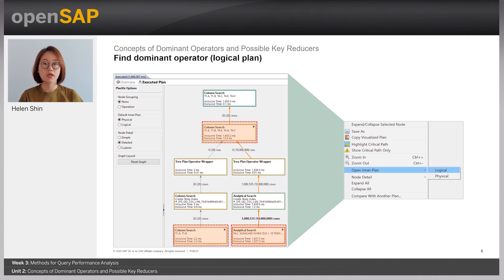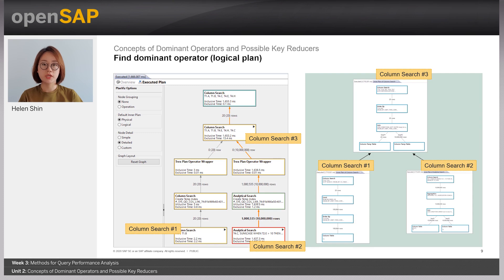Now let's check out the Logical Inner Plan for each column search and find the Dominant Operator and Possible Key Reducer within it. The Logical Plan gives you the big picture and overview of the plan, so it will be very useful to understand the query optimizer tree and structural information. To see the Logical Plan, you can just click the column search, choose Open Inner Plan, and select Logical. Then you will see the following Logical Inner Plan. We name the column searches as ColumnSearch1, ColumnSearch2, and ColumnSearch3.